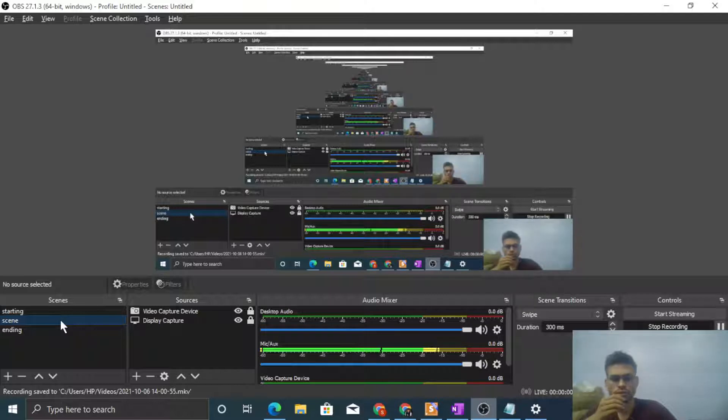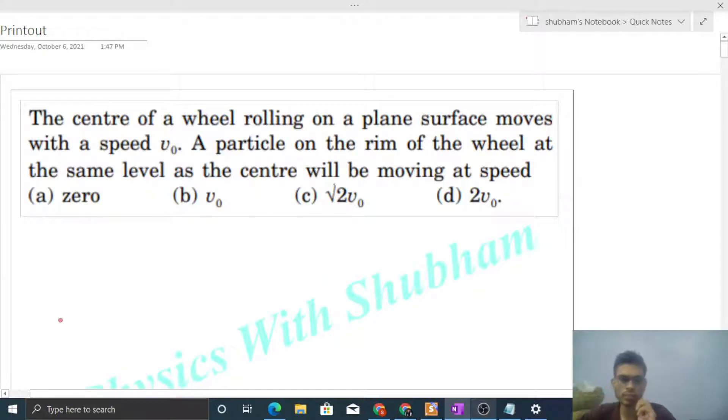Okay, hi everyone. Today let's discuss this interesting problem. It says the center of a wheel rolling on a plane surface moves with a speed v0. A particle on the rim of the wheel at the same level as the center will be moving at speed...